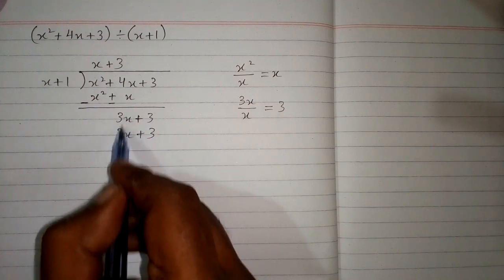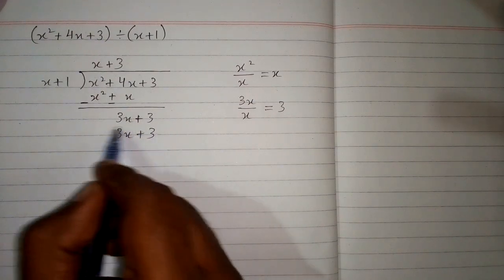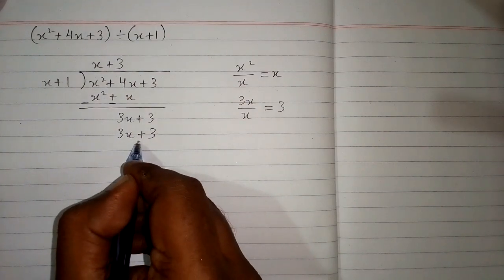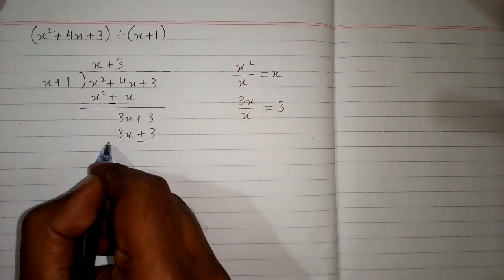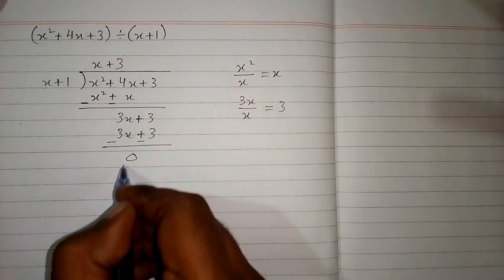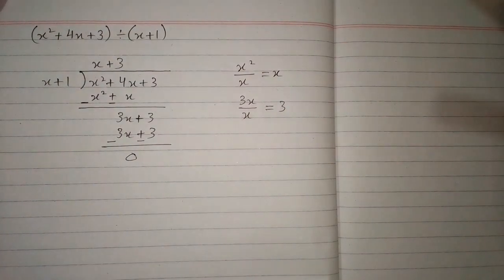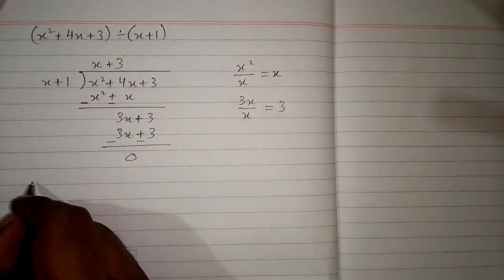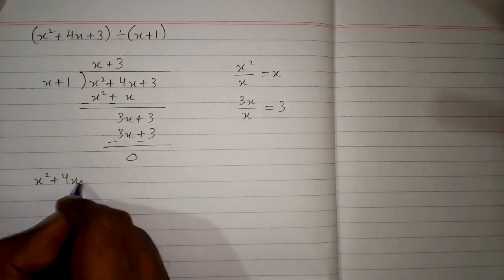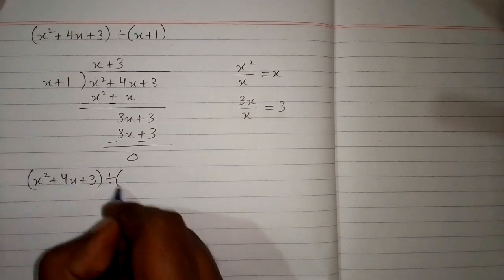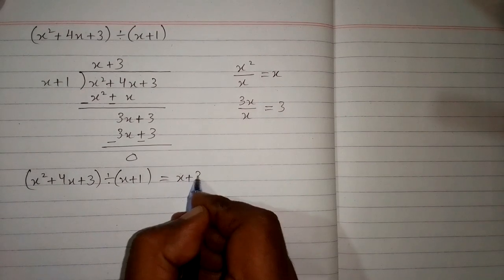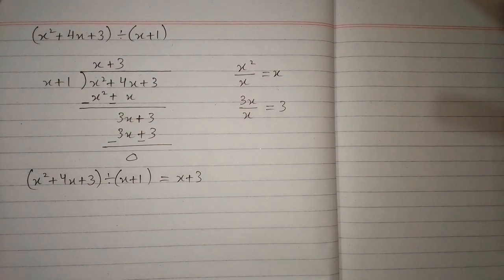Now we will subtract these polynomials. We change the sign of the second polynomial, writing minus signs. So 3x minus 3x is 0 and 3 minus 3 is also 0. So the remainder is 0. Therefore, x squared plus 4x plus 3 divided by x plus 1 is equal to x plus 3. This is the answer.